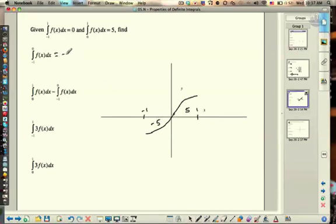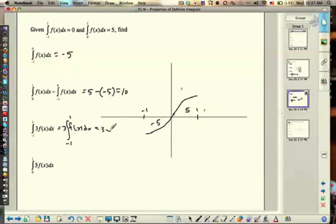0 to 1 which is 5, minus negative 1 to 0, so minus negative 5 is 10. This is 3 times the integral of negative 1 to 1 of f of x, put it out in front. And then negative 1 to 1 is 0, so it's 3 times 0, which is 0.